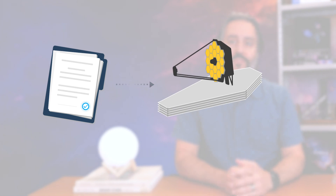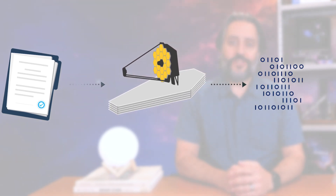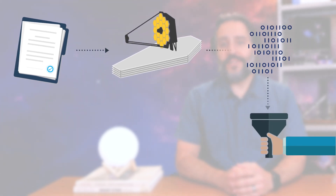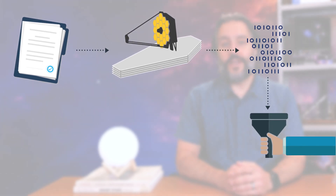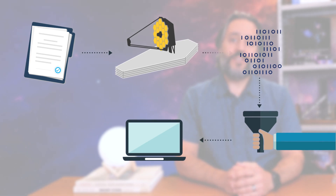Before I start working on a Webb image, the data have already gone through a lot. Scientists had to successfully propose to observe the target, which includes a lot of detail, like which filters Webb should use on its cameras. The data then went through a calibration system, developed primarily by scientists and engineers at STScI, which corrects instrumental effects and extracts useful and accurate information.